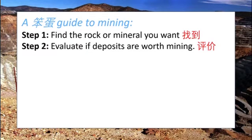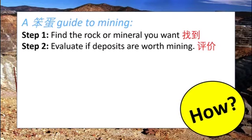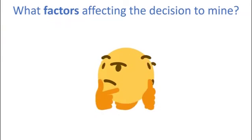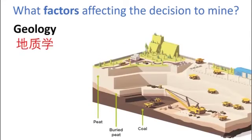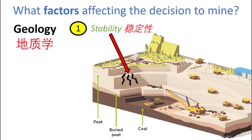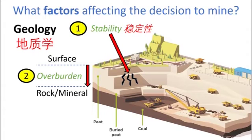Step two is where you evaluate if the deposits are actually worth mining. There are several factors to consider. First up is geology — the rocks you find in that area. The best rock type for mining is one that is very hard or stable, meaning there is a lower possibility of collapse during open pit or shaft mining, which makes it safer for miners. You also need to take into account the overburden — the distance from the surface down to the layer of rock or mineral you want to extract. The deeper the deposit, the more difficult and expensive it is to mine.